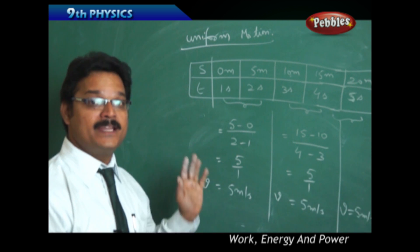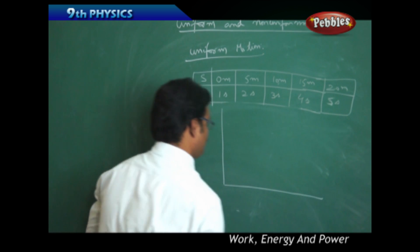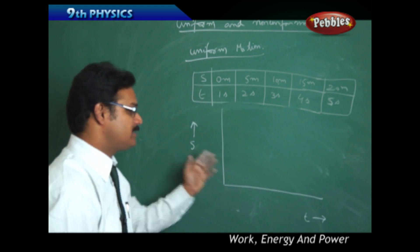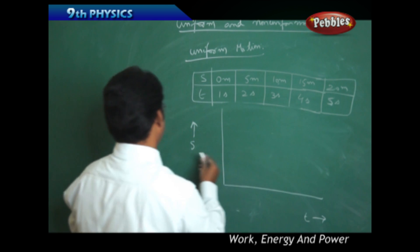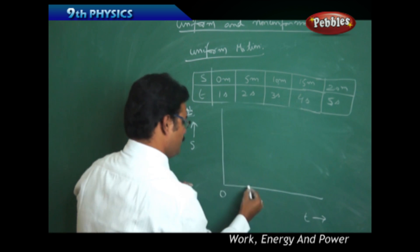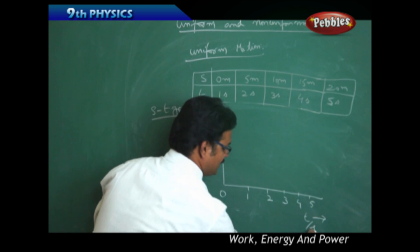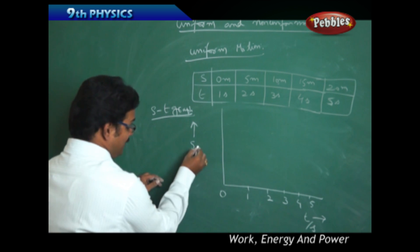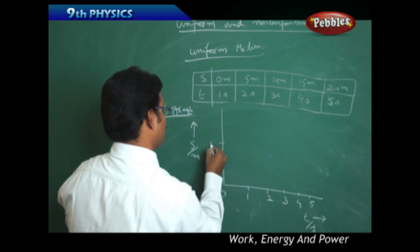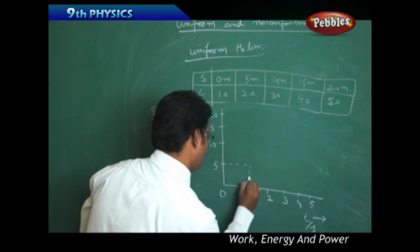Now I am drawing a distance-time graph, also called an S-T graph, with distance on the y-axis and time on the x-axis. On the time axis I mark intervals 1, 2, 3, 4, and 5 seconds, and on the distance axis I mark 5, 10, 15, and 20 meters. Now let us plot these points on the graph.